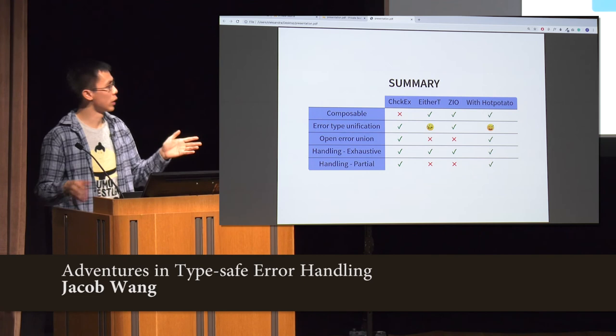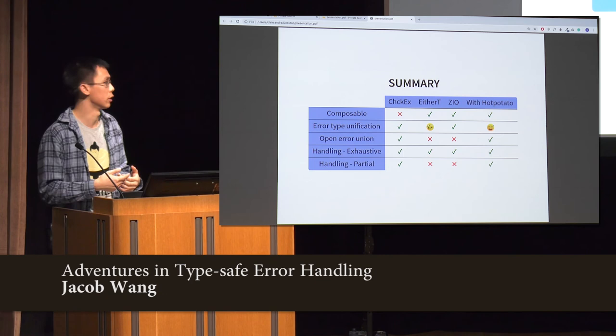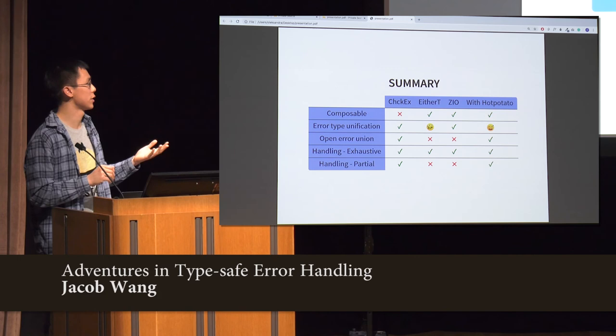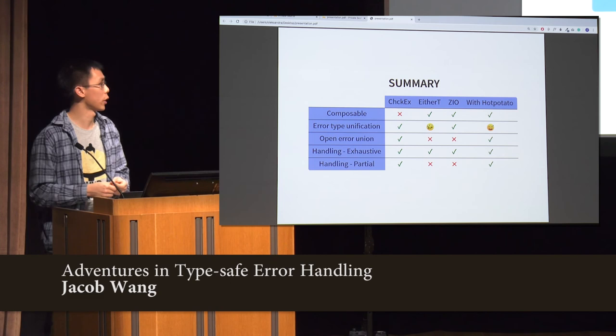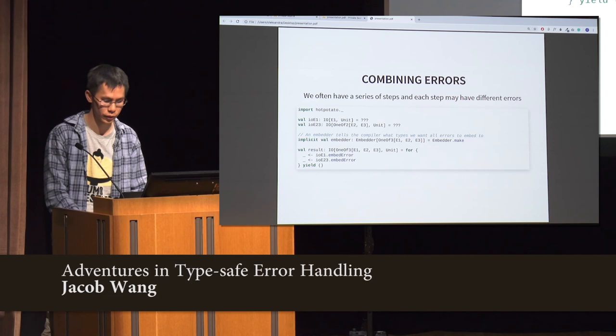So in summary, here's a comparison. The library is not really a replacement for ZIO or EitherT — it's more something you can use on top of ZIO and EitherT for error handling. EitherT is weaker on the type unification part when you have different error types. ZIO is nicer, but you can't do open error unions and you can't do partial error handling. But with this library you can do all of them, and you only sacrifice a little bit in terms of the work you have to do when combining errors.